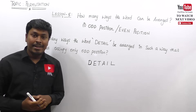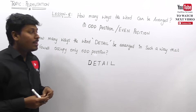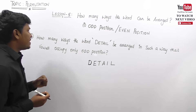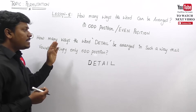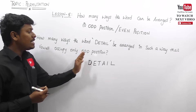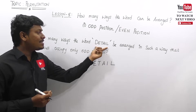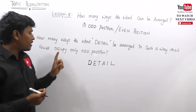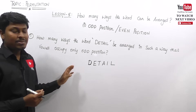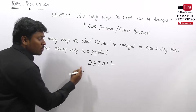Let me move on to Lesson 5, which is based on the condition called odd positions and even positions. The first question: how many ways can the word DETAIL be arranged such that vowels should occupy only odd positions? A word is given — DETAIL — and our target is that the vowels should only occupy the odd positions.